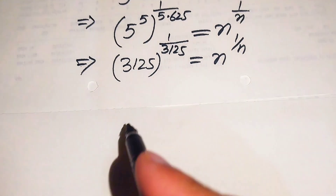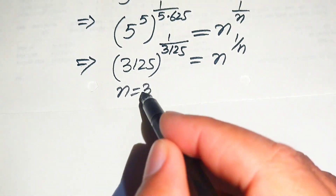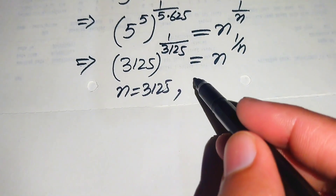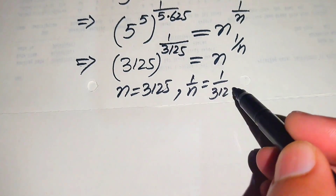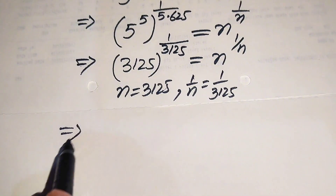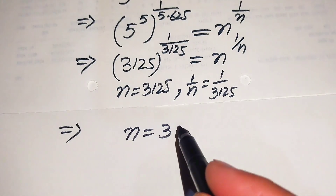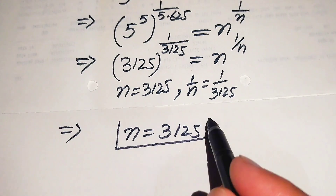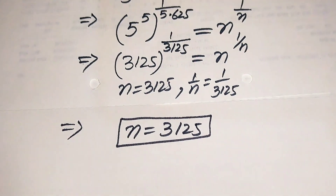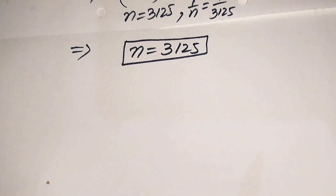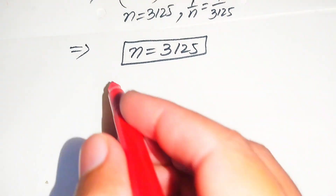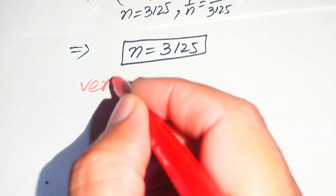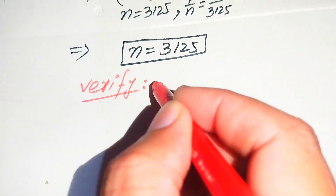On both sides, the exponents are the reciprocal of the bases. Comparing the bases gives n equals 3125, and comparing the exponents gives 1 over n equals 1 over 3125, again yielding n equals 3125. So we get only one root: n equals 3125. In the next step we verify whether this value of n satisfies the given equation or is an extraneous root.